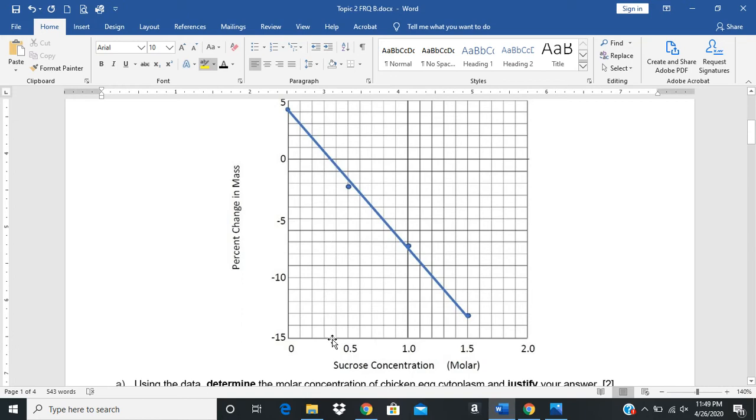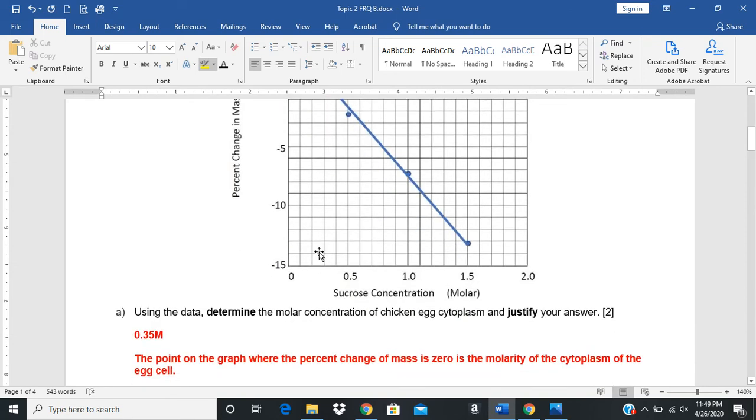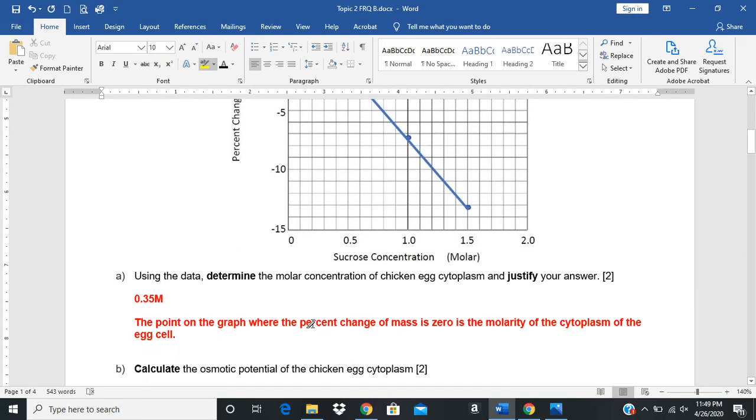That molarity is about somewhere between 0.3 and 0.4. Best estimate 0.35. Some people said 0.32, some people said 0.36 - that's fine, there's a range that we're accepting. We don't want to see people put things like 5 or 2. That's the point on the graph where the percent change of mass is zero, and that would be the molarity of the cytoplasm.